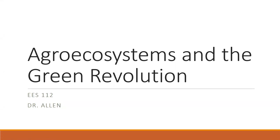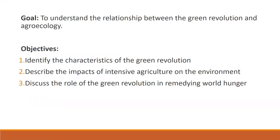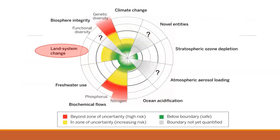Today's lecture is on Agroecosystems and the Green Revolution. Here are the goals and objectives associated with this lecture. I'm going to try to make these transparent so you can use them as practice test questions to check your knowledge at the end of the lecture. These slides are posted on the course website. Just a reminder of the framework for the class — we're going through the planetary boundaries, and this is the first planetary boundary we're looking at in depth: land system change.